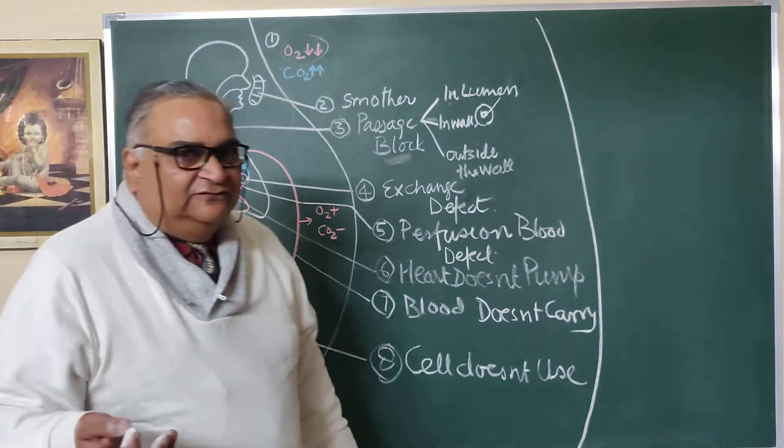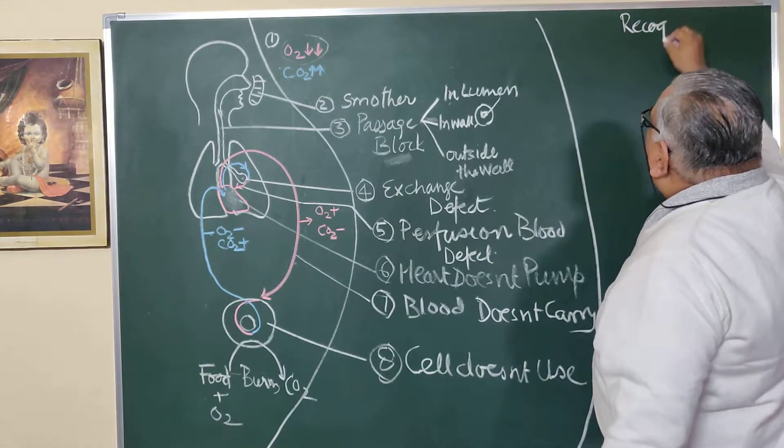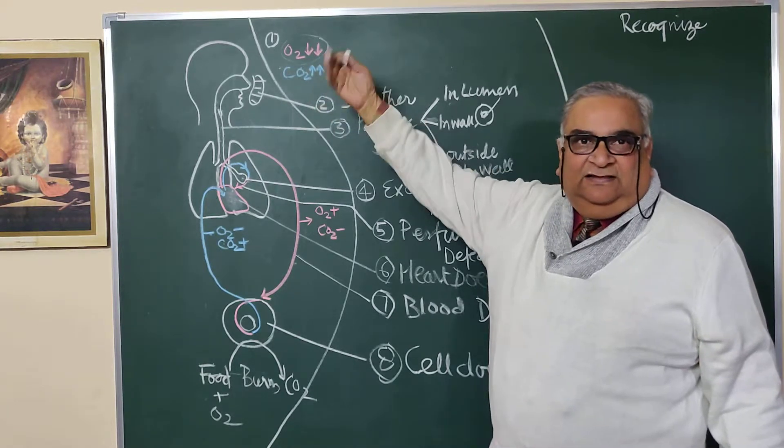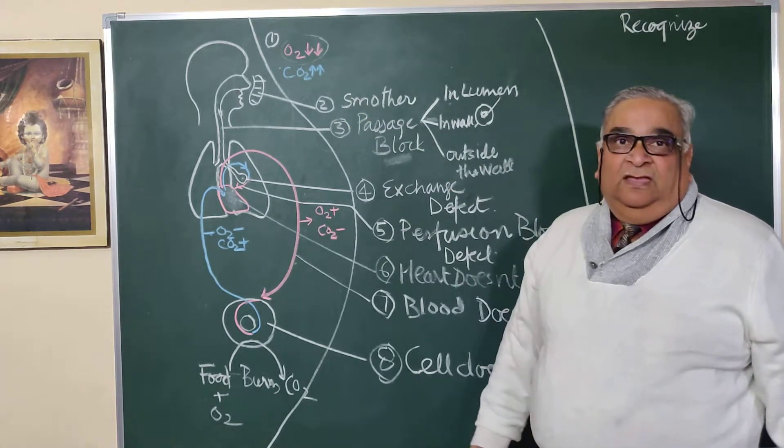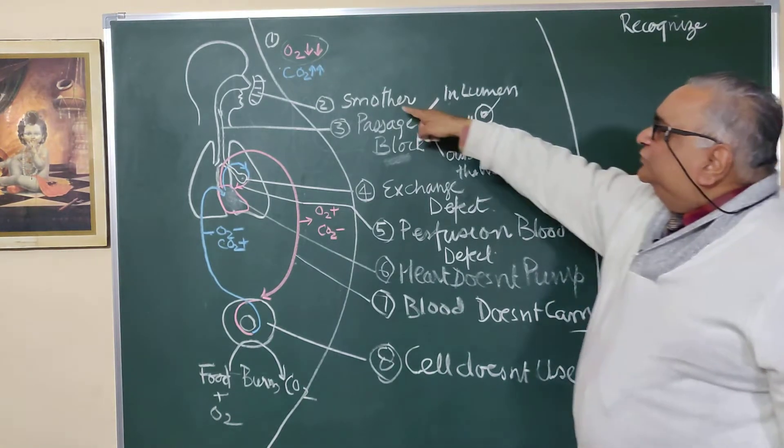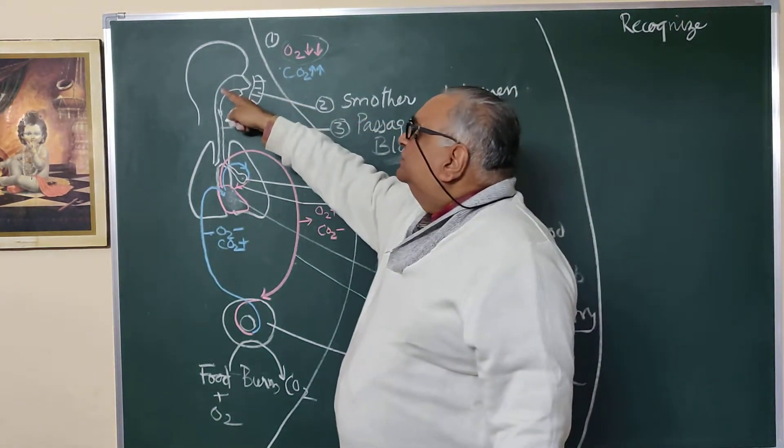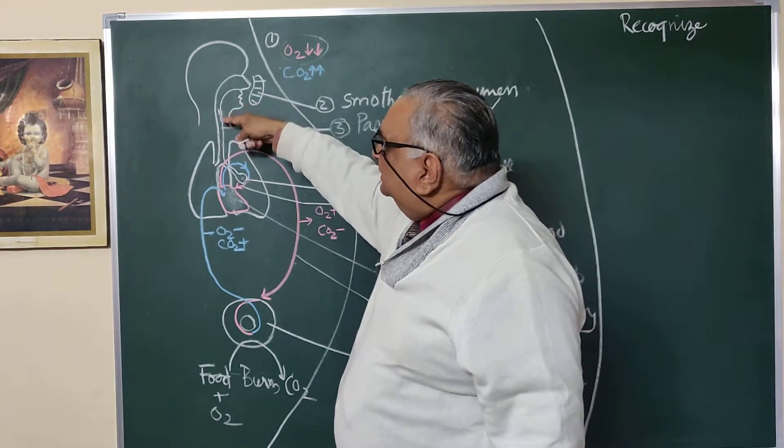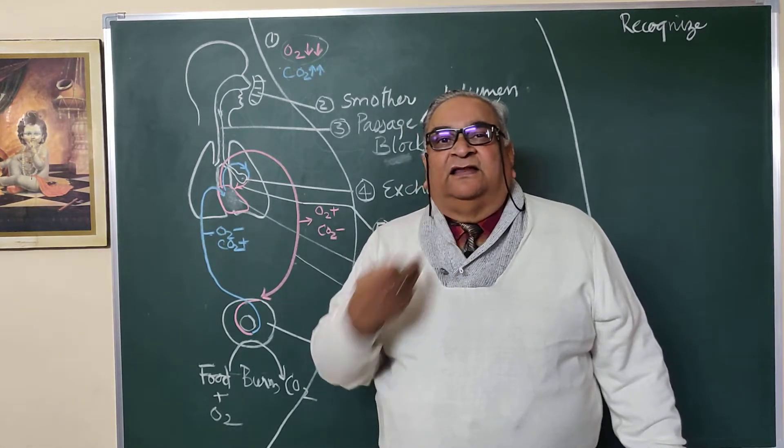So these can be the various causes of breathlessness or respiratory failure. Now how to recognize them? What is the checklist which would be able to recognize them? You test for oxygen and CO2 - whether external conditions provide excess CO2 and less oxygen. If so, as soon as you replace this, the person will quickly recover. If you remove the smother, the person will quickly recover. In the passage, you look into the mouth, look into the membrane for diphtheria membrane.